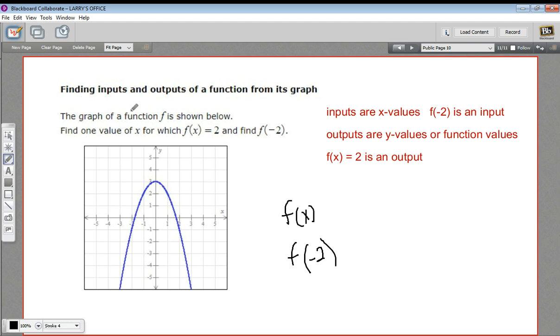So let's look at this problem. It says the graph of a function f is shown below. Find one value of x for which f of x equals 2. So where does y equal 2? Here's y equals 2, and there are two spots on this function where y equals 2 at x equals negative 1. So this would be x equals negative 1, or it could be x equals 1. Both of those answers would be correct.